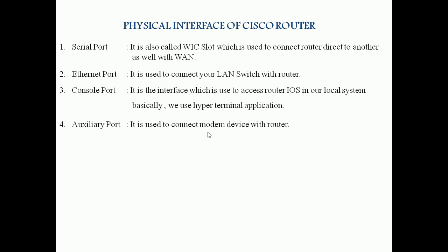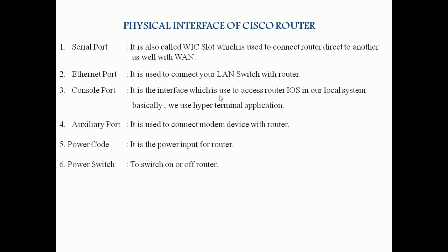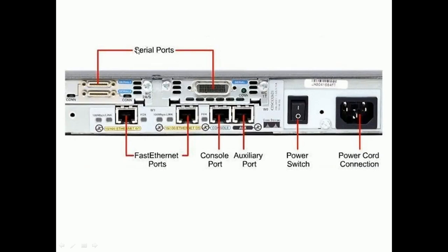The auxiliary port is used to connect a modem device with the router. There is also the power cable input for the router, and the power switch used to turn the router on or off. As you can see here: the serial ports are used for wide area or router-to-router connections, two Fast Ethernet ports serve as LAN ports, the console port accesses the router OS, the auxiliary port is for modem connection, and the power switch and power cable connection are also visible.